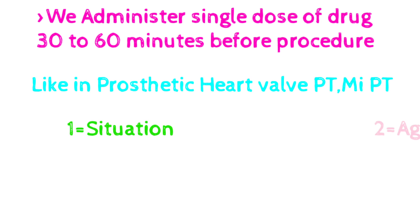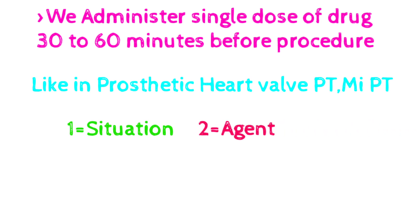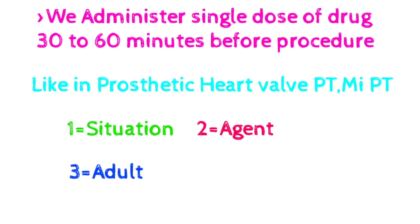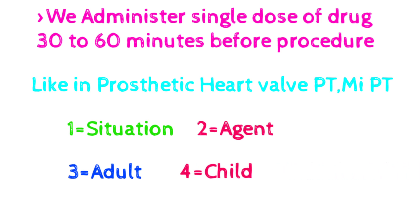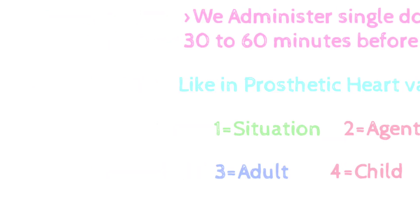We will study antibiotic prophylaxis with simple tricks and mnemonics to remember doses. First, we will study this topic under four headings: situation, agent, adult dose, and child dose. The situation refers to whether the patient is able or unable to take the drug orally; the agent is which drug we give; and the dose will differ between adults and children.